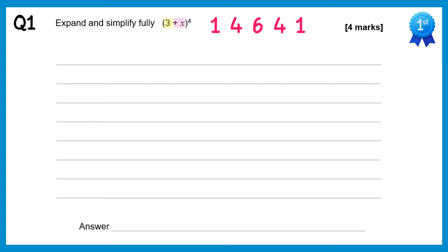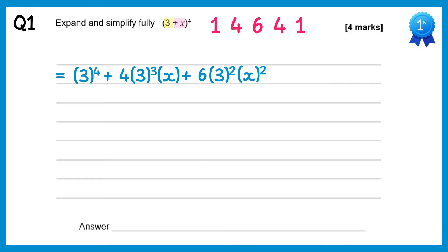So we need to do a to the power 4, so 3 to the power 4, plus 4 lots — that's from Pascal's triangle — of 3 to the power 3 times x, plus 6 lots of 3 squared times x squared, plus 4 lots of 3 times x cubed, plus x to the power 4.